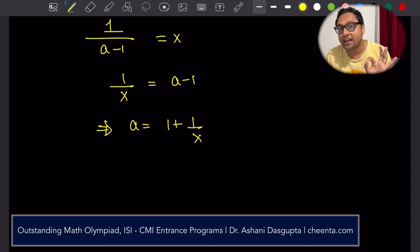We found that a, the value of a is same as 1 plus 1 over x. We want to find out 1 plus 1 over x raised to the power 30. That is a to the power 30.